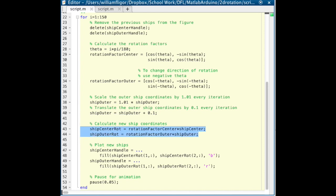Calculate the new ship coordinates by multiplying the rotation factors by the ship coordinates, plot the new ships, and pause for animation.